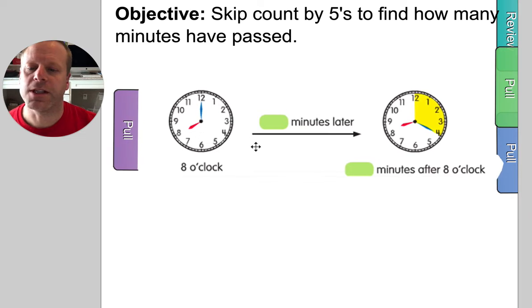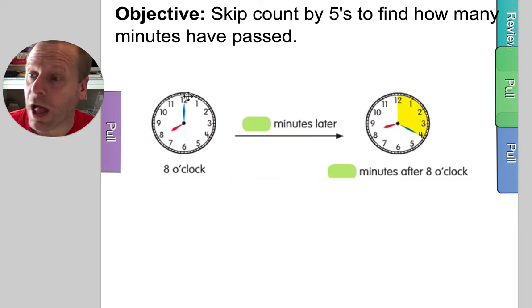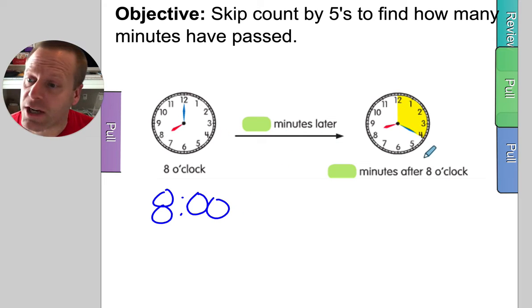So this is the work we're doing today. They're going to show you a clock. You're going to build it, think about it, you might even write it. Eight o'clock. Then you're going to look at a change that happens. The yellow signifies the change. How many clicks? How many minutes? How much movement did the blue hand have to do to get from the 12 all the way over to the four? That is what they're asking you. How much time has passed?